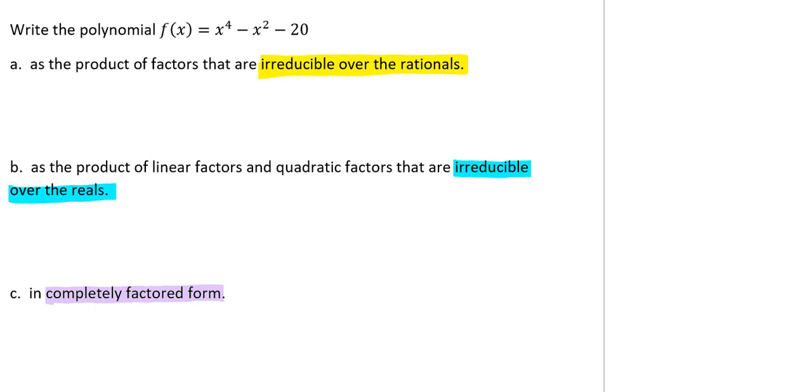A quadratic factor with no real zeros is said to be prime or irreducible over the reals. We want to be sure that we see that this is not the same thing as being irreducible over the rationals.